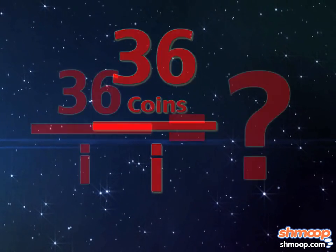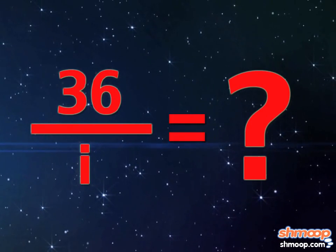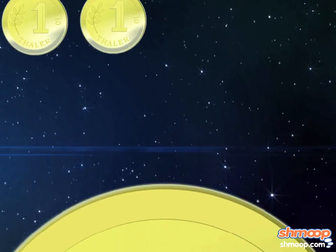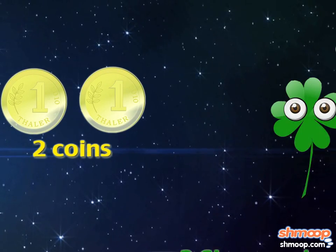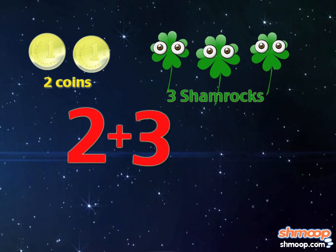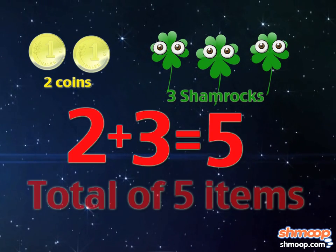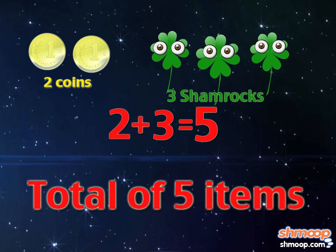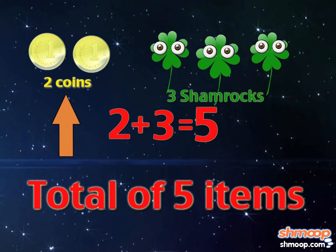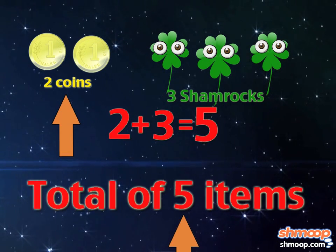Now let's set up an equivalent ratio for coins to total items. We have two coins to every three shamrocks, giving us a total of five items. So we know that two out of every five items are coins.